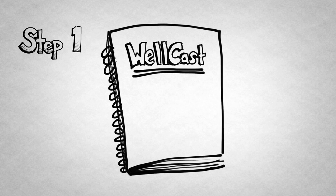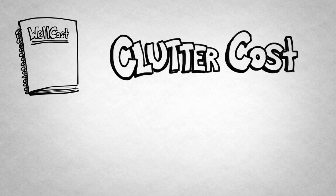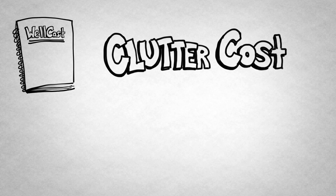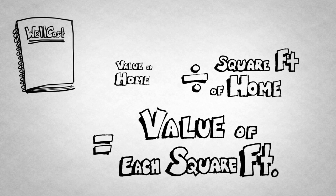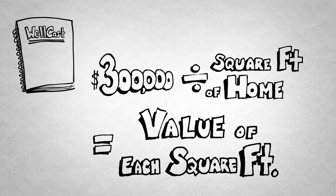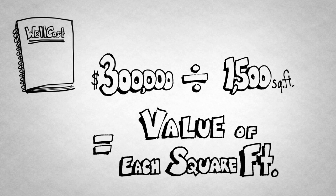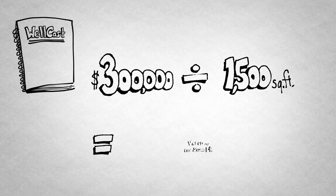Step one, open your Wellcast journal. We're going to determine exactly how much every square foot of your house is worth. This is called the clutter cost equation. Take the value of your home and divide it by the total square footage. This will give you the value of each square foot. For example, if you own a $300,000 home and it has 1,500 square feet, the value of each square foot is $200.